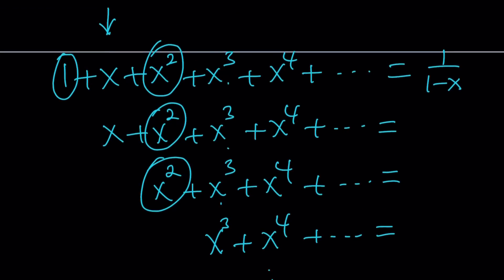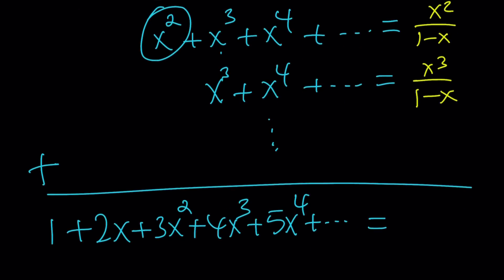So, multiply the top 1 by x, you're going to get this. Then multiply by x again, you're going to get this. Multiply by x again, you're going to get this. And so on and so forth. Right? You get the idea?